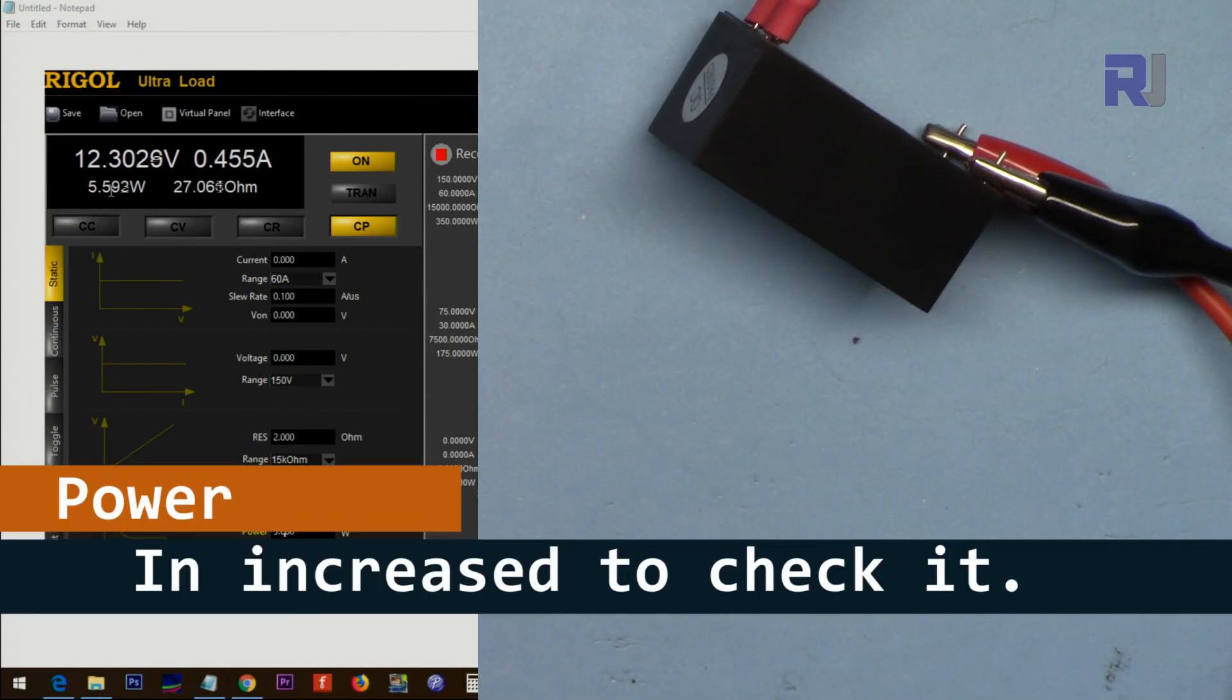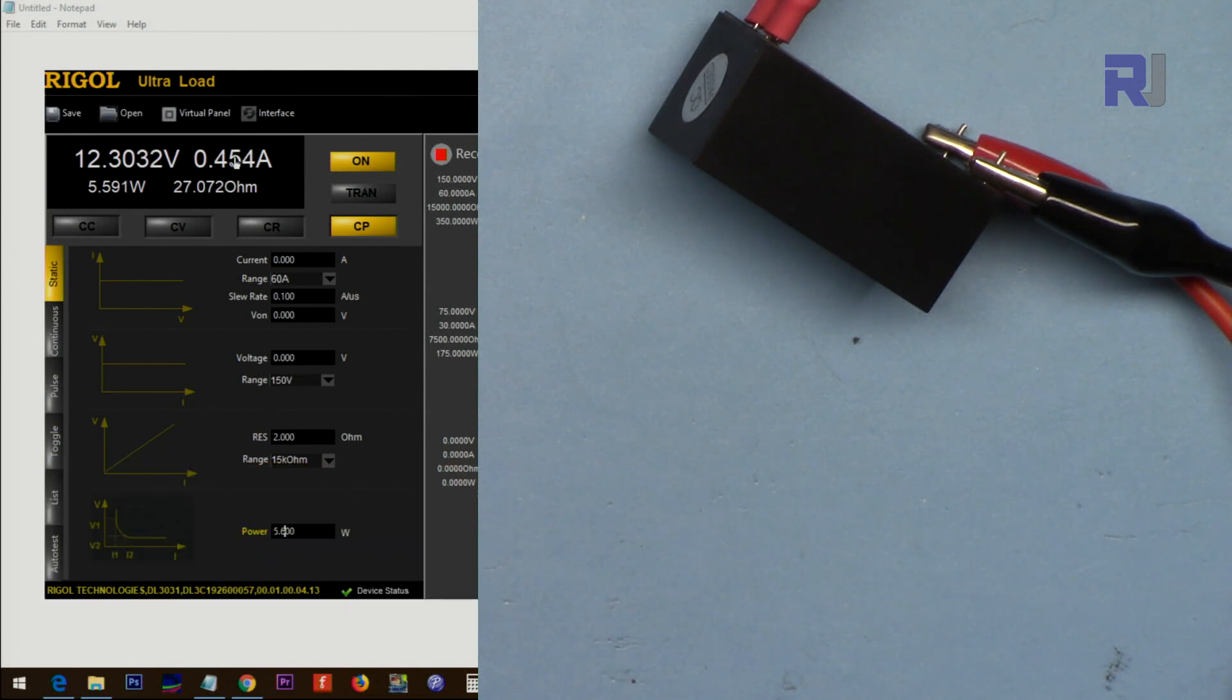5.6 now, 5.7 watts, 5.8 watts, 5.9. As you can see the protection kicks in and the output is 0 to protect it. When you turn it off, now let's go 5.6.